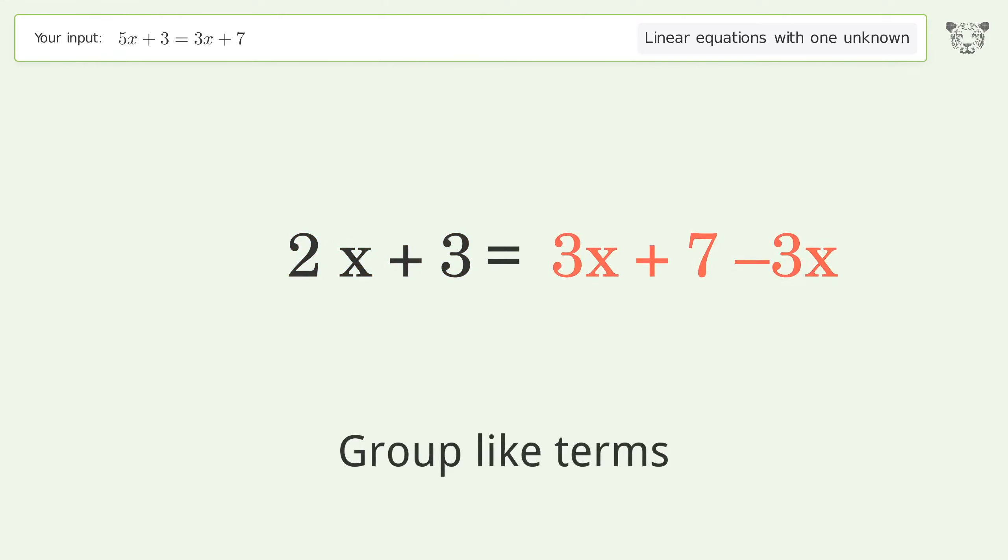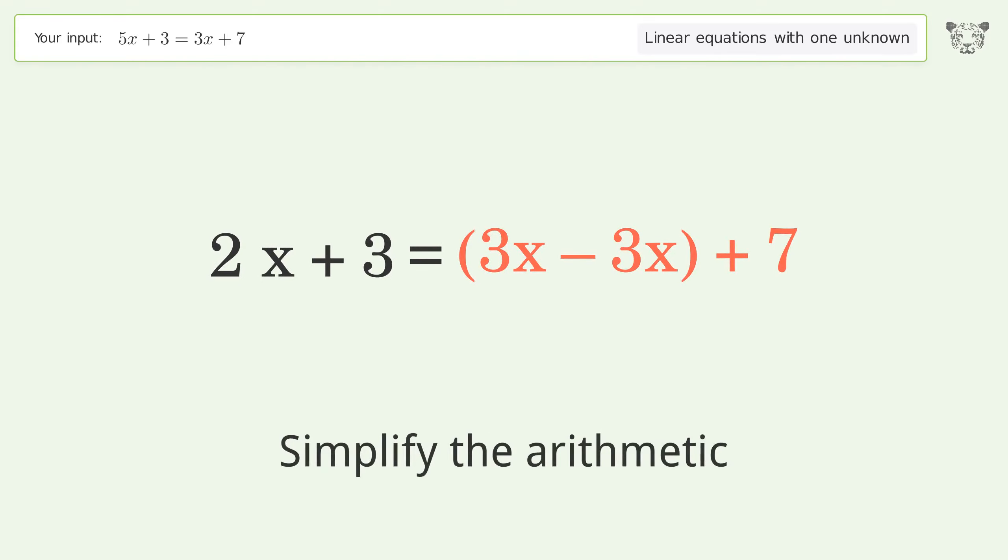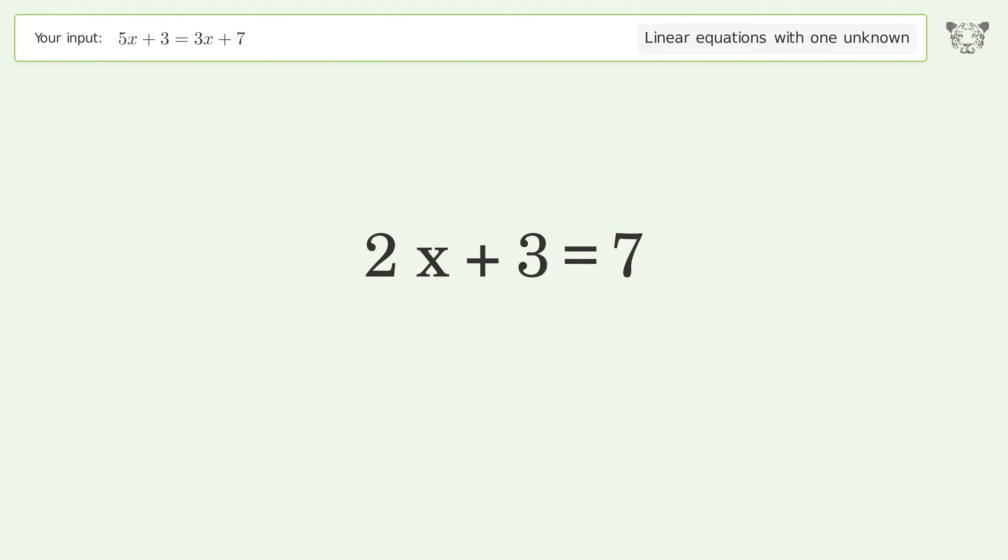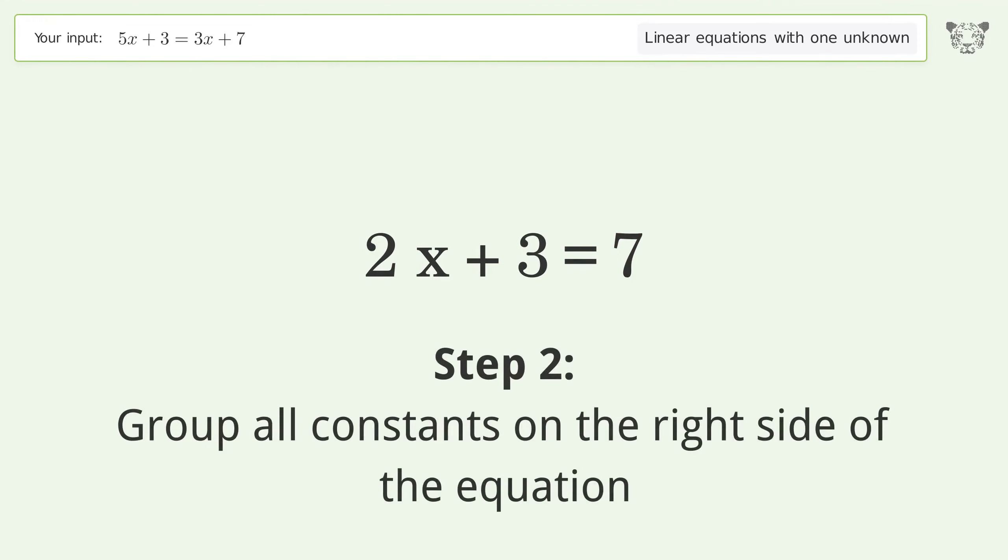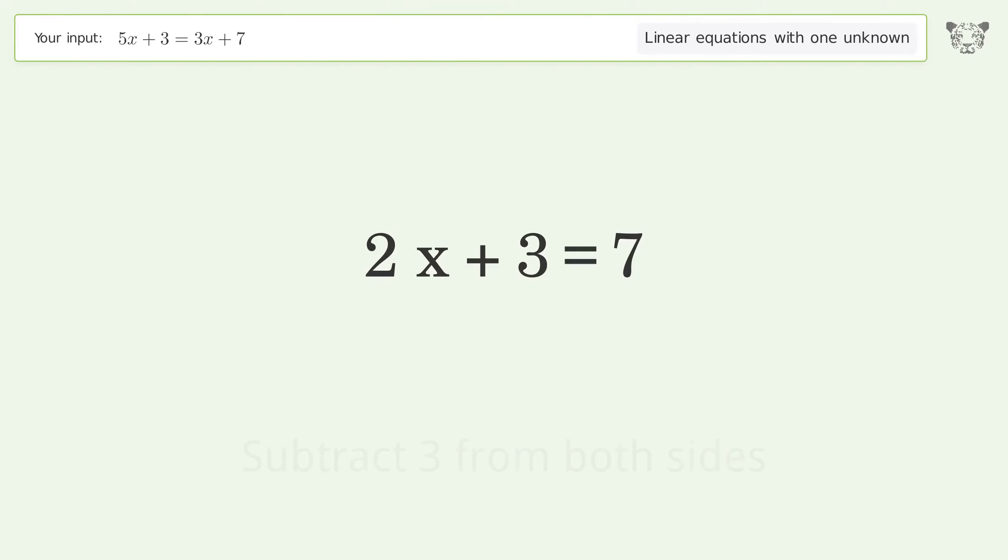Group like terms and simplify. Group all constants on the right side of the equation. Subtract 3 from both sides and simplify the arithmetic.